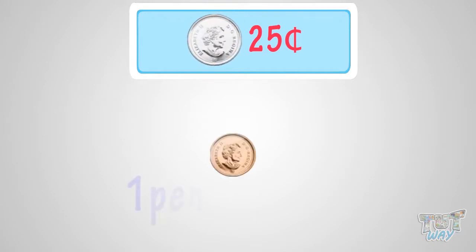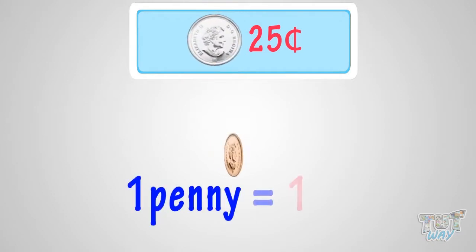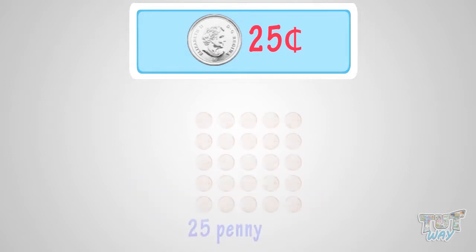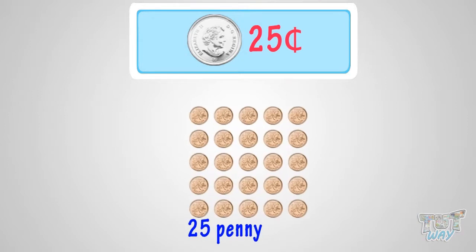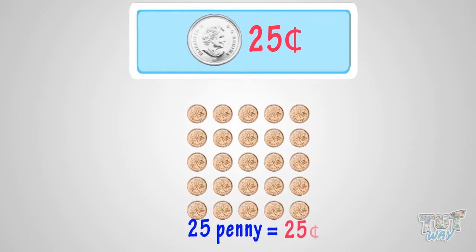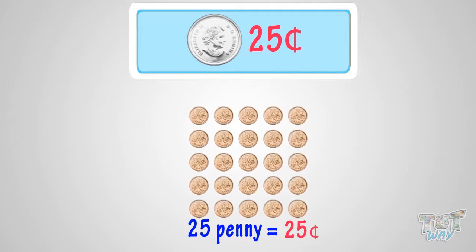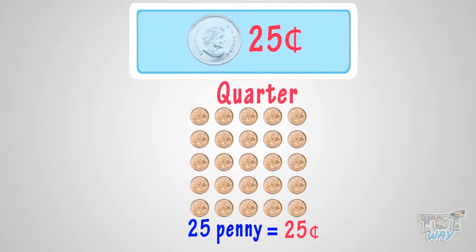One way is 25 pennies. As one penny is one cent, so 25 pennies make 25 cents. So you can exchange 25 pennies for a quarter.